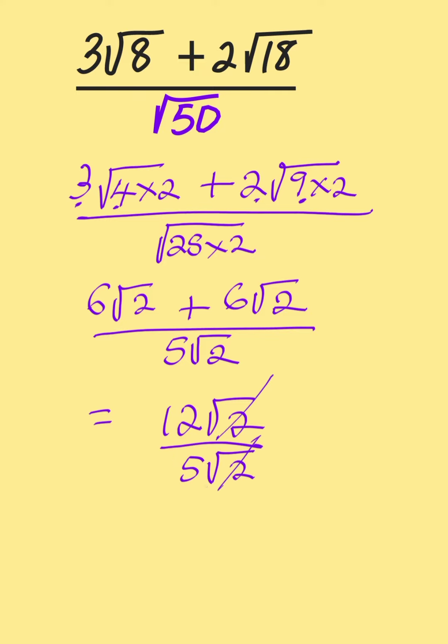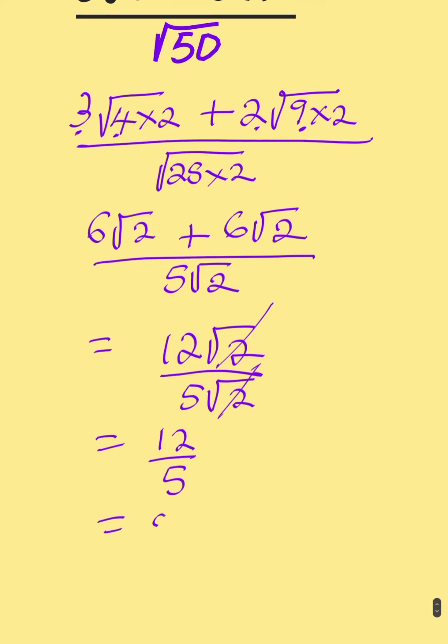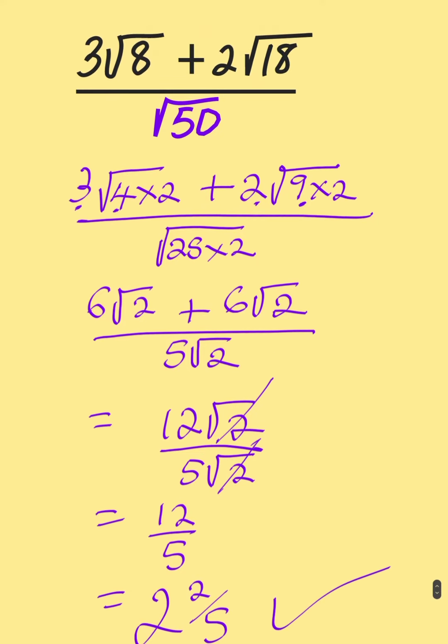Without wasting time, √2 will cancel √2, leaving us with 12 over 5. And 12 over 5 can be written as 2 and 2/5. This is the solution to this particular problem.